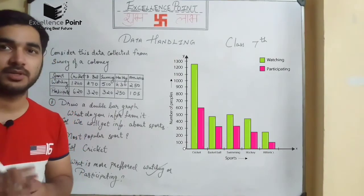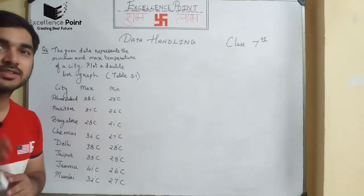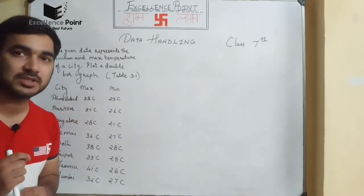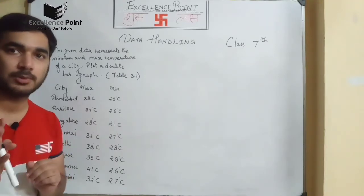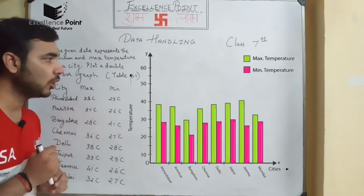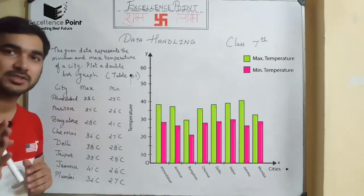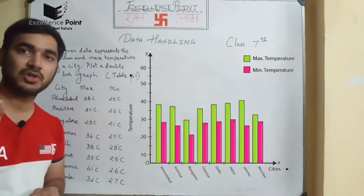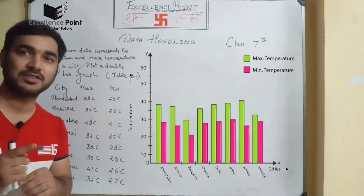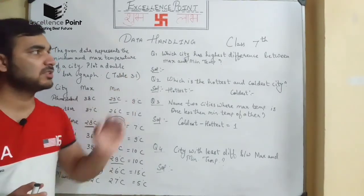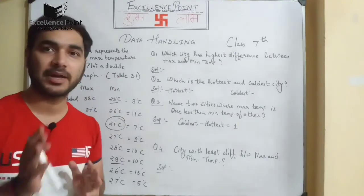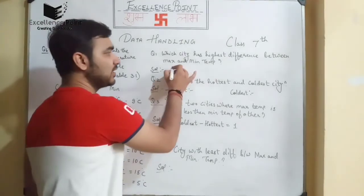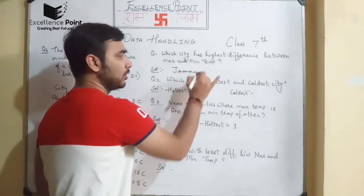Question number 6 is the last question. There is table 3.1 and we have to draw a double bar graph from it. The graph shows the hottest and coldest temperatures — the maximum and minimum temperatures of various cities. Question 1 asks which city has the highest difference between maximum and minimum temperature. The answer is Jammu.